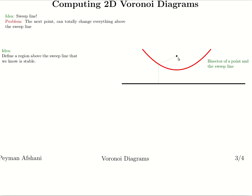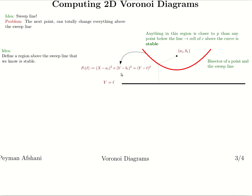Imagine we have a point P and a sweep line L. The bisector is the set of points that have equal distance to both the point and the sweep line. This is given by an equation: the square of the distance from point (X, Y) to the point (Ai, Bi) equals the square of the distance from (X, Y) to the sweep line at coordinate L. Any point (X, Y) that satisfies this equation is a point of the bisector. The key property is that any point above this bisector is closer to the point (Ai, Bi) than to any point below the sweep line.